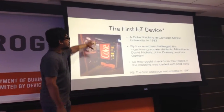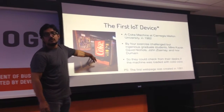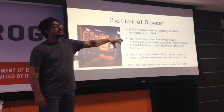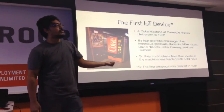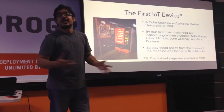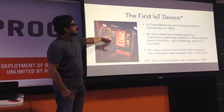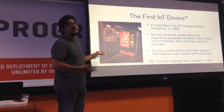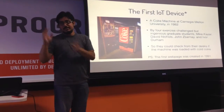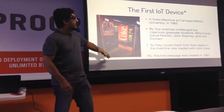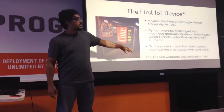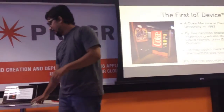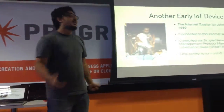What they did was they took a Coke machine and connected it to the internet protocol — TCP/IP — and they were able to monitor what was the stock: how many are there, how many are cold, how many are not cold, and so on. Remember, the first web page was created in 1991. This happened in 1982 — I was not even born then.